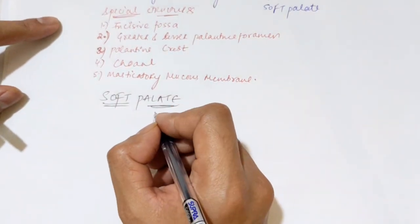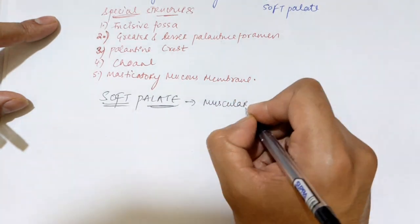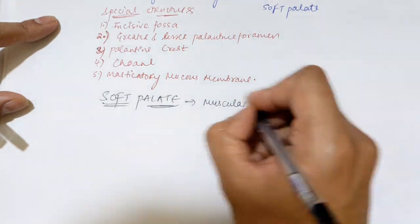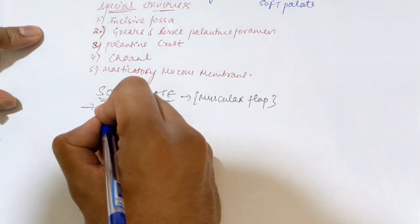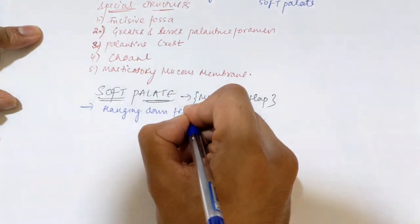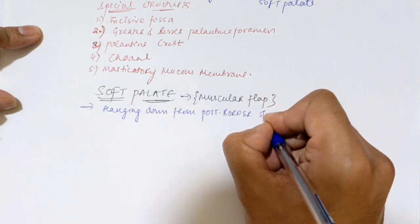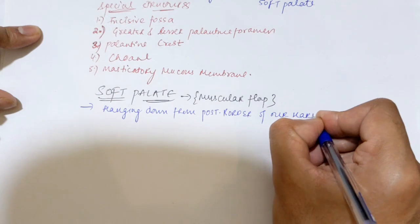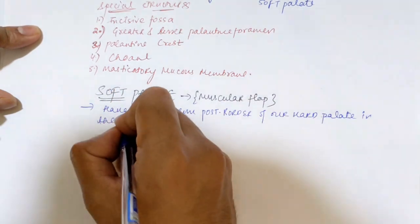Now we have to see our soft palate. The soft palate is just a muscular flap — a muscular flap-like organ. It is actually hanging down from the posterior border of our hard palate.